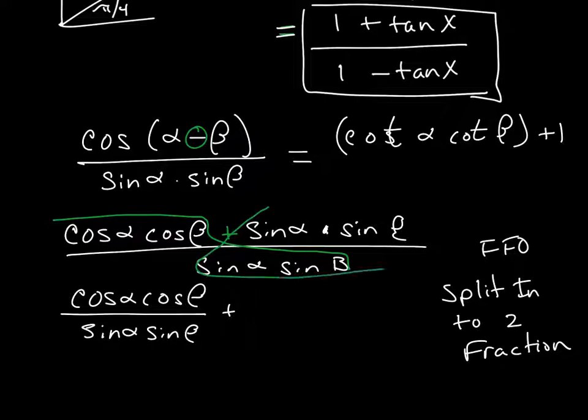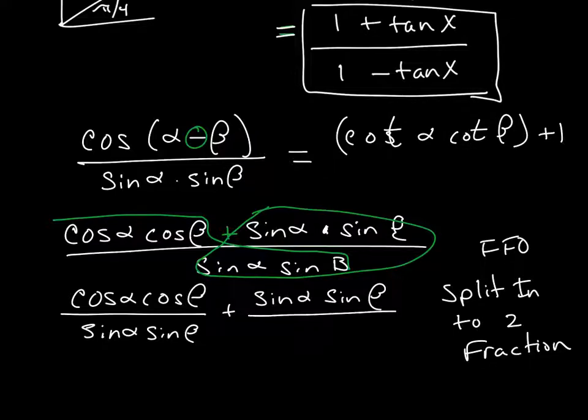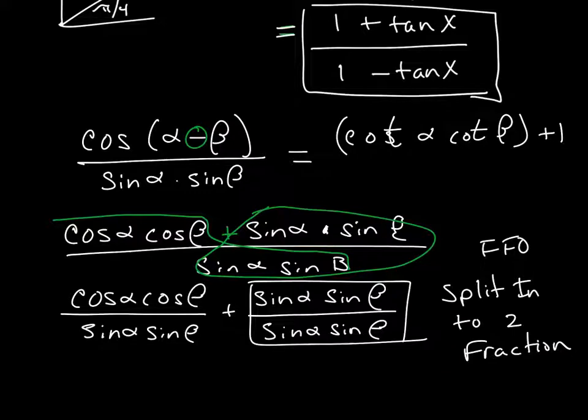And now I'm adding it to the other fraction, the one that I have here, which is sine of alpha, sine of beta, all over sine of alpha, sine of beta. What's lovely about this is all of this is equal to 1.